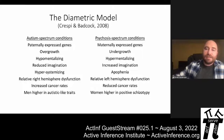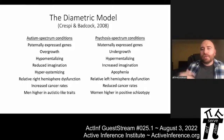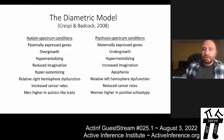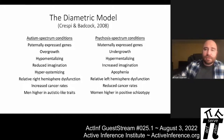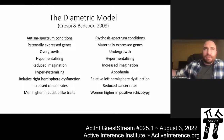On the psychosis side we see opposite characteristics: maternally expressed genes promote psychosis spectrum conditions, undergrowth especially in infancy, hypermentalizing (increased attribution of mental states to others, often manifesting as paranoia), increased imagination, apophenia (predisposition to false positives), relative left hemisphere dysfunction, and reduced cancer rates at least with schizophrenia. There's also a sex difference with positive schizotypy — women tend to be higher in positive schizotypy, and men tend to present more often with degenerative schizophrenia while women tend toward acute psychosis.